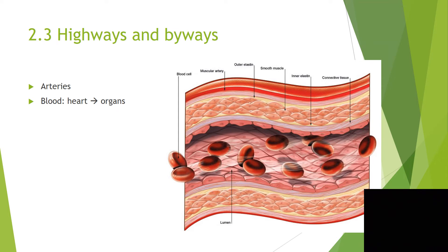Section 2.3: Highways and byways. Arteries move blood away from the heart. Here you can see an artery — it has lots of muscle on its outer wall. They are so muscular because they have to withstand high blood pressure. Because of all this muscle, the diameter is actually not so large.